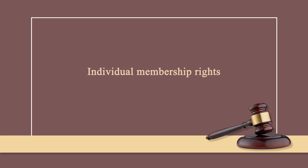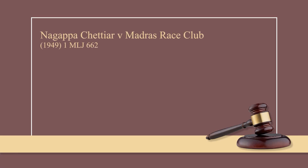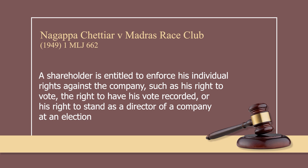Individual membership rights: Every shareholder has vested in him certain personal rights against the company and his co-shareholders. A large number of such rights have been conferred upon shareholders by the Act itself. They may also arise out of articles of association. Such individual rights are known as individual membership rights and, while respecting them, the rule of majority simply does not operate. In Nagappa Chettyar versus Madras Rail Club case, the court observed that a shareholder is entitled to enforce his individual rights against the company, such as his right to vote, the right to have his vote recorded, or his right to stand as a director of a company at an election. Every shareholder can assert such a right in his own name.